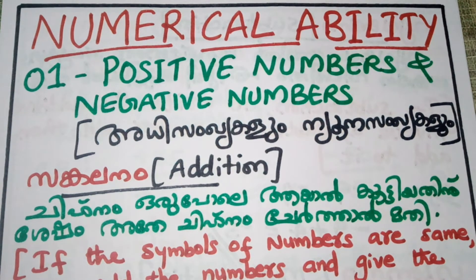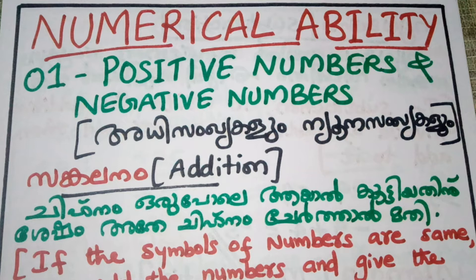We will cover the four arithmetic operations: Addition, Subtraction, Multiplication, and Division — known in Tamil as Sangalanam, Vyagakalanam, Gonanam, and a fourth operation. These four operations are what we are going to work through.